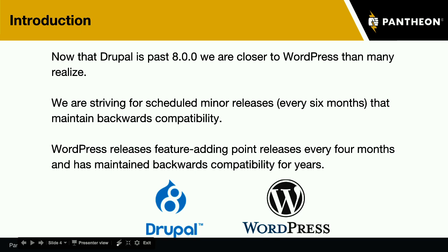So why should we be talking about WordPress now? My own perception up until a couple months ago was that the Drupal community was far ahead of the WordPress community in every respect — our code is now object-oriented, we've got a REST API. The WordPress I remembered was a PHP-4-oriented system. But now I see some lessons we can learn. Now that we are past Drupal 8.0.0, we're at 8.1.1, and the idea is to maintain backwards compatibility within the Drupal 8 life cycle, adding new large features every six months with point releases.